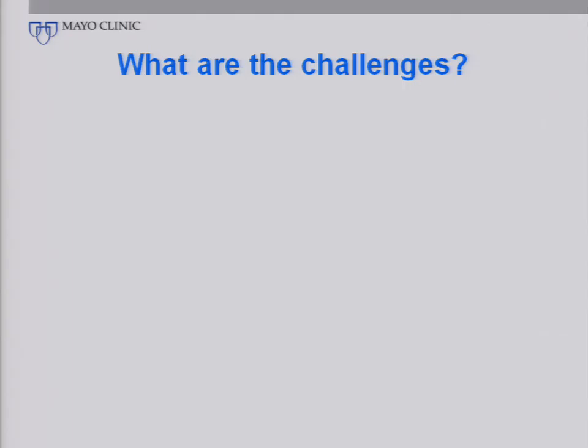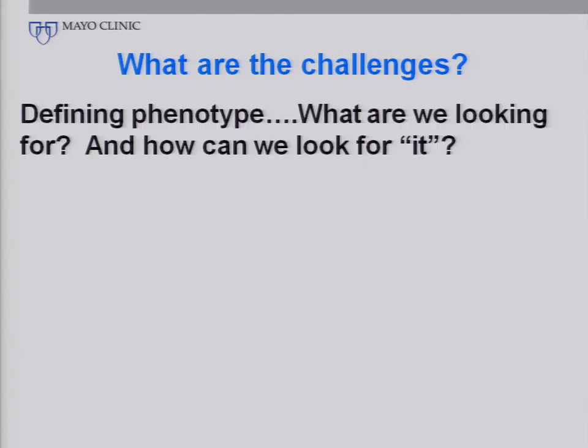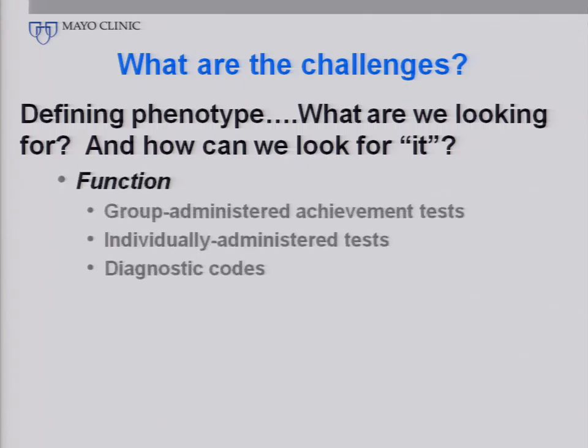We've already talked quite a bit about the challenges involved in studying this area. The major one is that still in humans, as Andrew has described, we really don't know what the phenotype is. What are we looking for? And if we found it, would we know it? There are lots of different ways we can look at this in humans: group-administered achievement tests, individual-administered tests of various cognitive domains, diagnostic codes, and other ways to have some clues about what the phenotype or phenotypes might be.